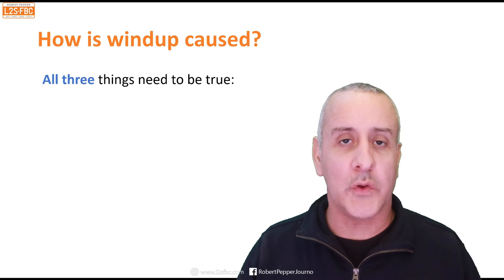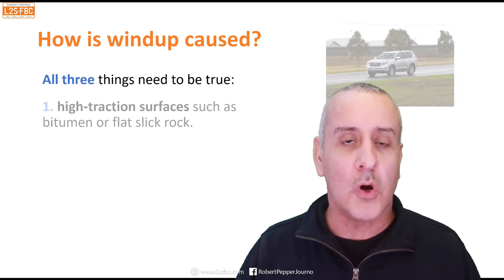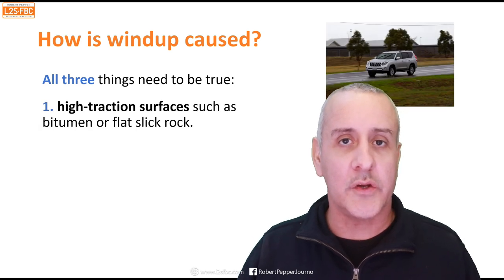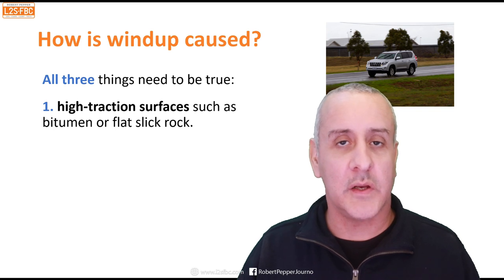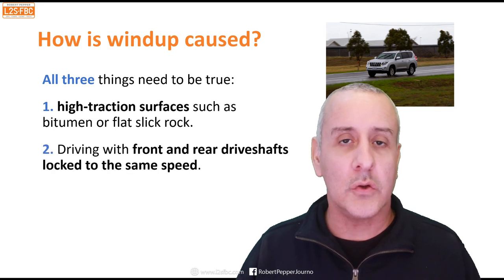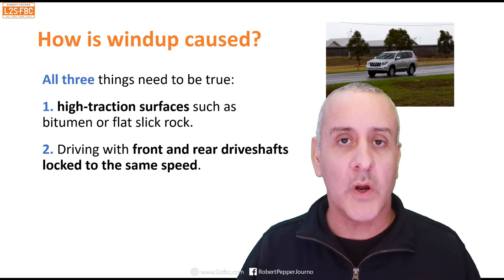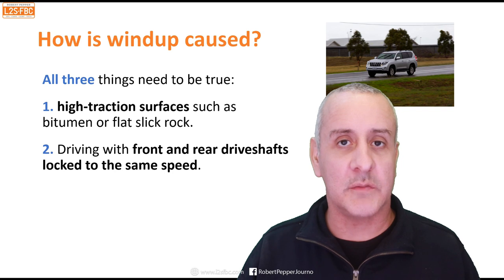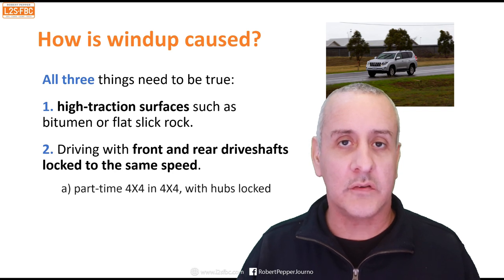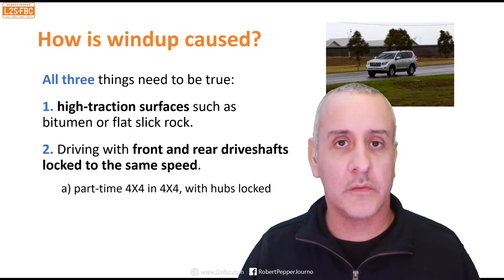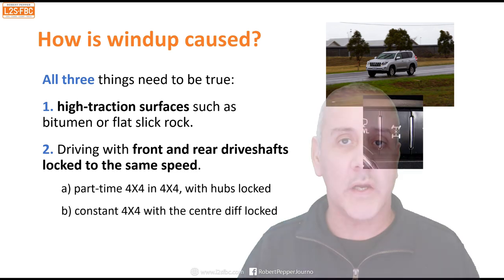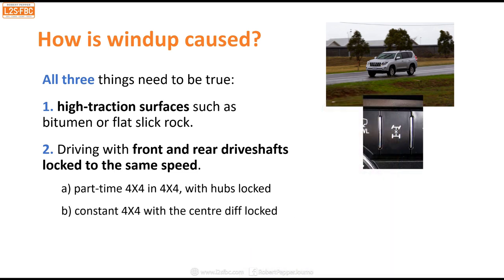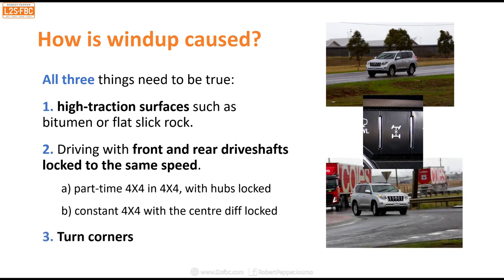Wind-up is caused by three things being true simultaneously. One: you must be on a high traction surface such as bitumen, dry or wet. Two: the vehicle must be in a mode where it is forcing its front axle to turn at the same speed as the rear axle — examples are a part-time four-wheel drive in four-wheel drive, or a constant four-wheel drive with a manually lockable centre diff that is locked. Three: you must be turning a corner.